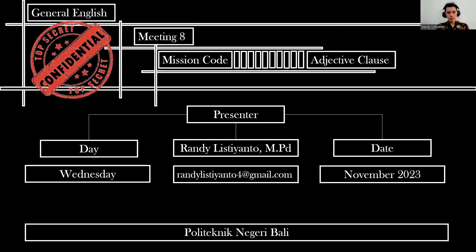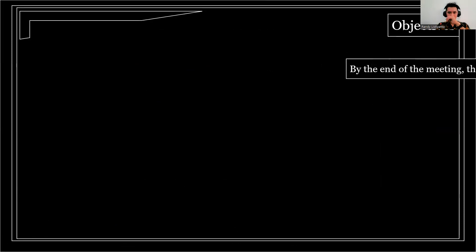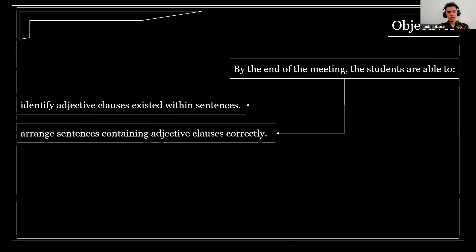The topic being discussed here is General English, and the subject is adjective clauses. The things you have to pay attention to in this topic are: the objectives, introduction, the concept, the types, the conclusion, and question and association. After learning this topic, you are expected to be able to first identify adjective clauses existing within sentences, and second, arrange sentences containing adjective clauses correctly.